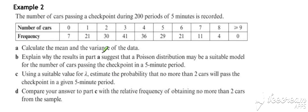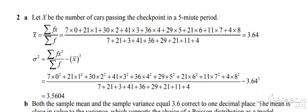So in this example, you've been given a frequency table and you've been asked to calculate the mean and the variance of the data. We could have just plugged the information into our calculator as a frequency table. Here it's been done the long way around. We've got a mean of 3.64 and a variance of 3.56.